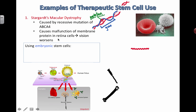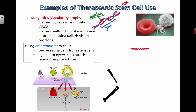We can use embryonic stem cells and trick them to turn into retinal cells using a specific concoction of temperatures, chemicals, and treatments. Then it's quite simple — you inject those cells into the eye, hoping that the ones with the correct protein will do the job that the retinal cells with the broken protein aren't able to do. You're trying to replace broken cells with fixed cells, or at least have the working cells take over for the broken ones.